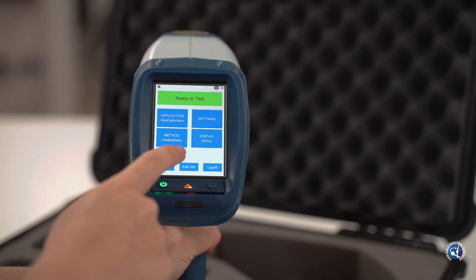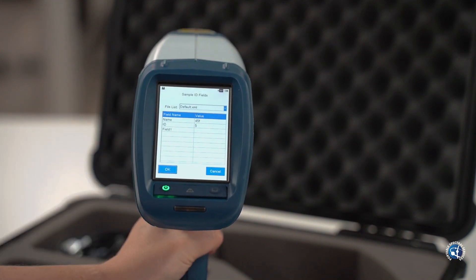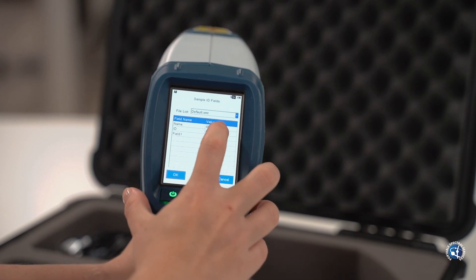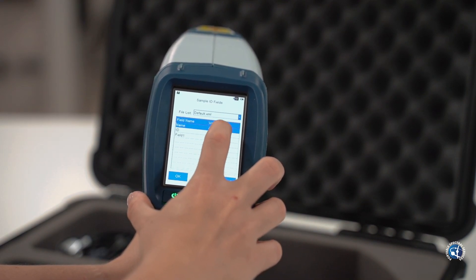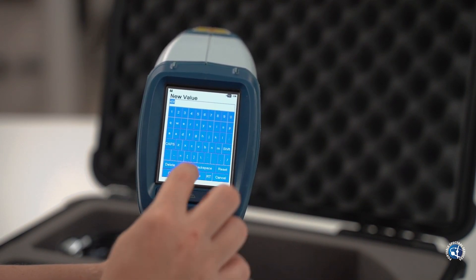To name your samples from the home screen, click edit info, double click on the white box in the value column and enter in the desired name using the keyboard. Click OK and you're ready to go.